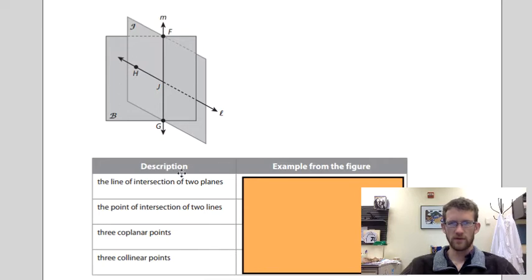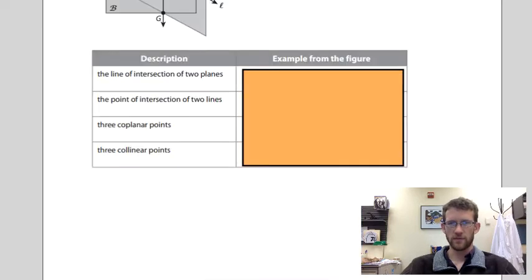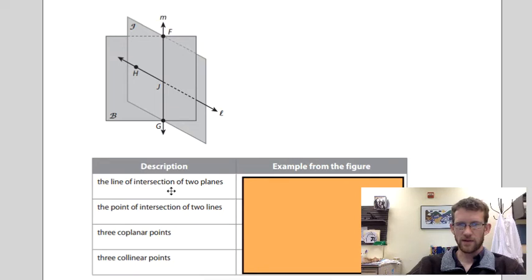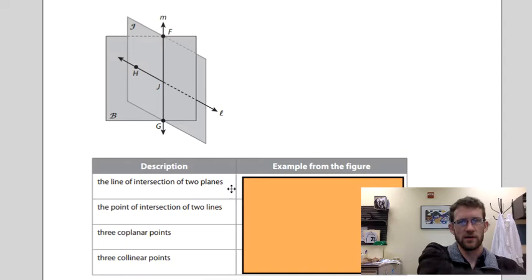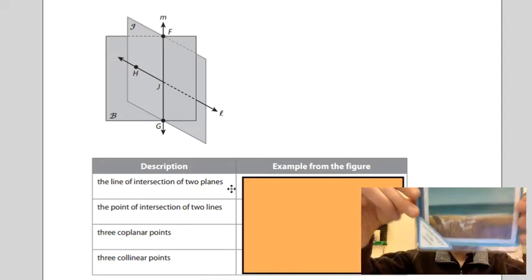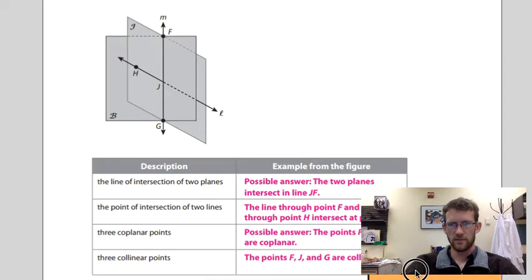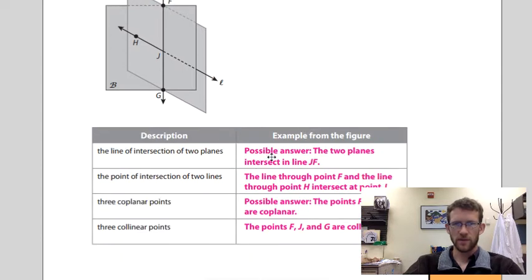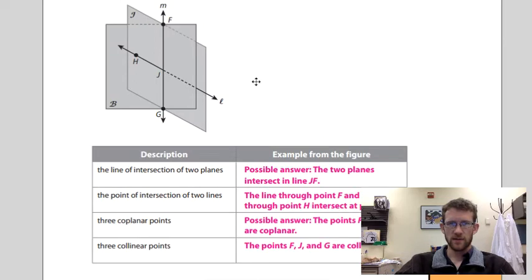Okay, so this one we're looking at the figure. We just need to pull out an example from the figure. So what is an example of the line of intersection of two planes? I'll let you guys do this one. Pause. Here's some examples. There are other examples for a lot of these. So two planes can intersect at JF. You could also have GF or FG or something like that. Any of those would work. Point of intersection of two lines: the two lines here all meet at point J.